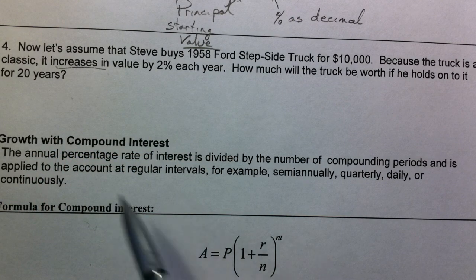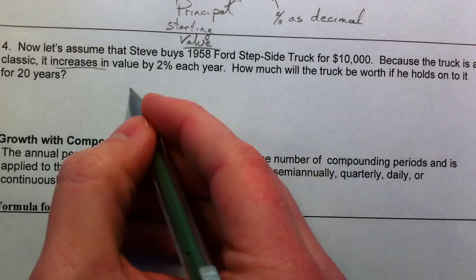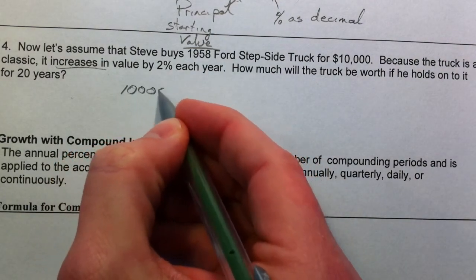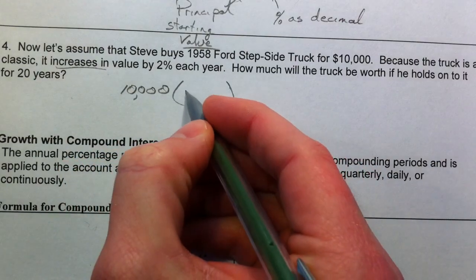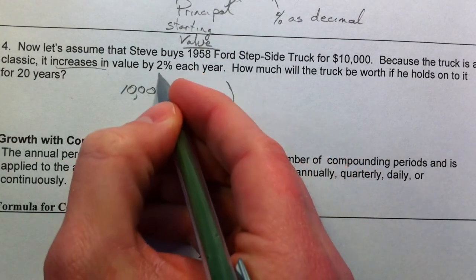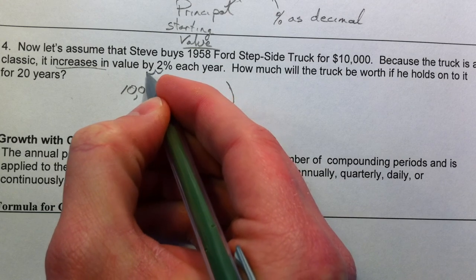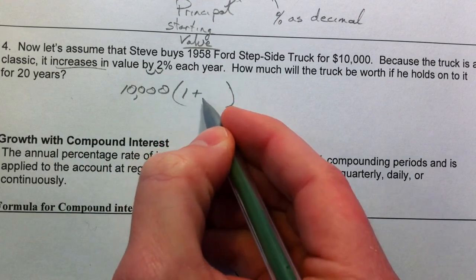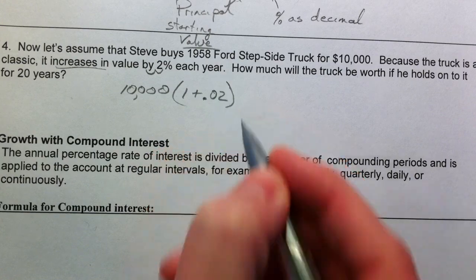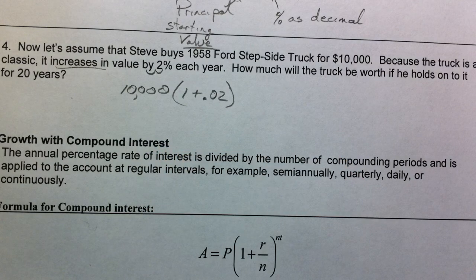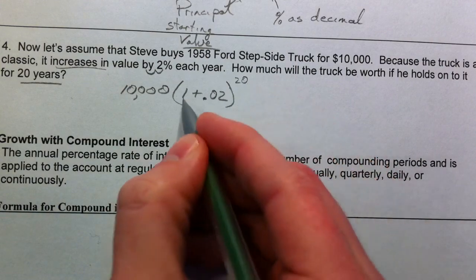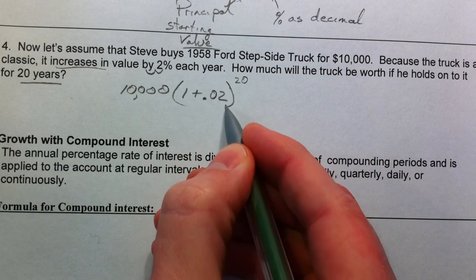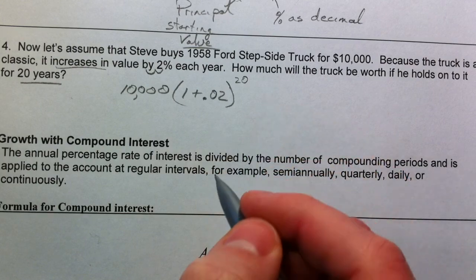And so rather than subtracting from 100%, we're going to have a truck worth $10,000. That's our principal value. That we're going to multiply by 1 plus. This is 2%. So I'm going to move that twice, 1 plus 0.02. We want to know if he holds on to it for 20 years. So if we multiply it by 1.02 twenty times, how much is that going to be worth?